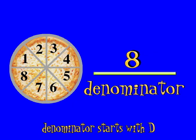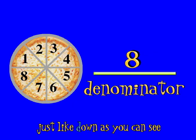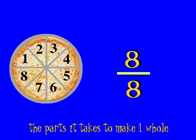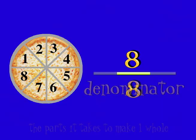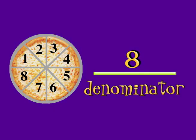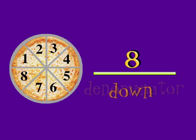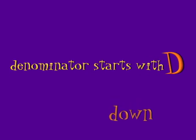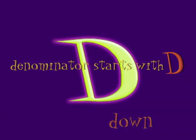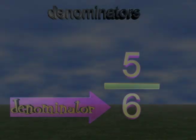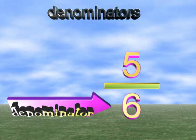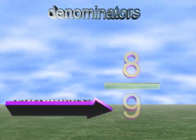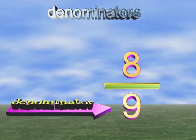Denominator starts with D, just like down, as you can see — the parts it takes to make one whole. Denominator always down, the closest number to the ground. Denominator starts with D. It's the six in five-sixths, it's the three in four-thirds, it's the nine in eight-ninths, alright.